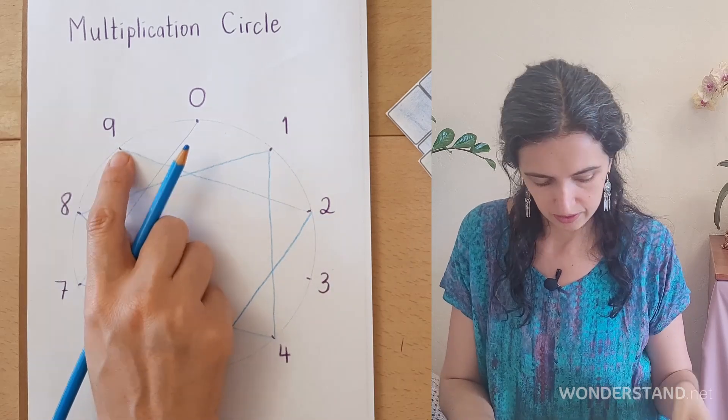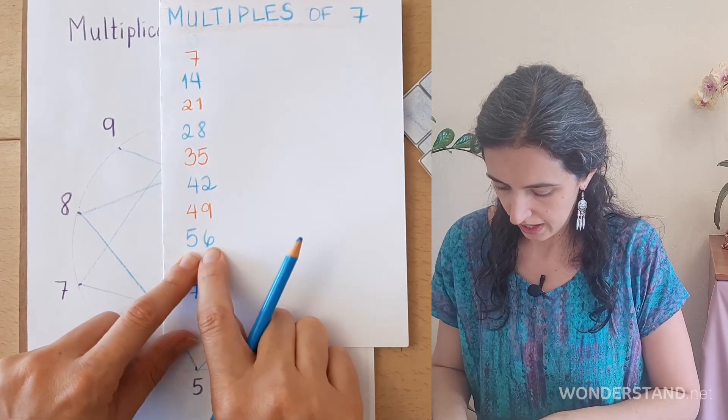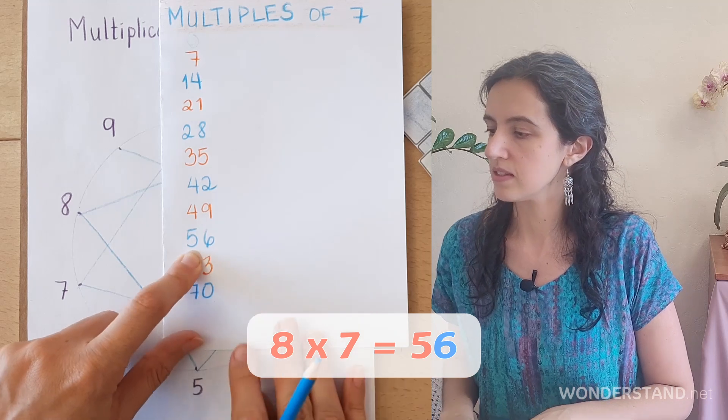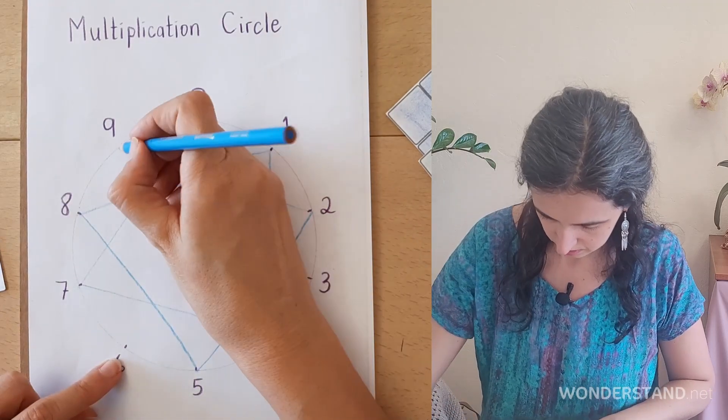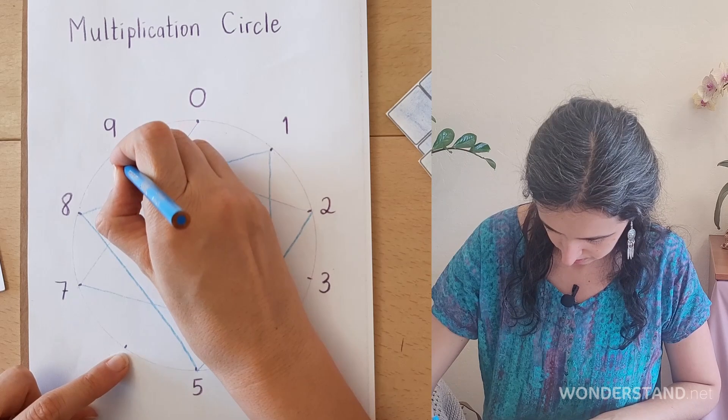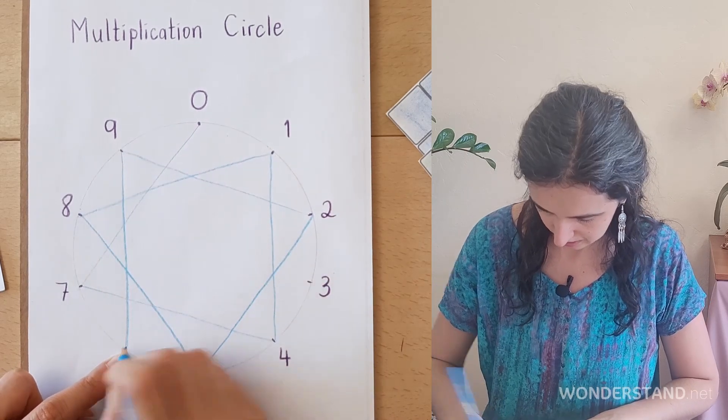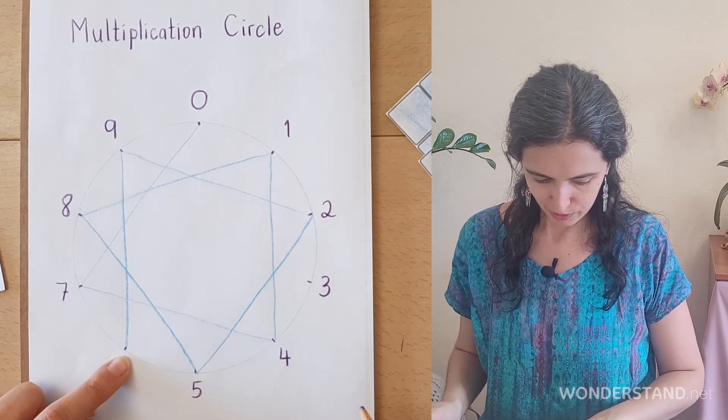8 times 7 is 56. 56. Straight line. Almost there. We have two more.